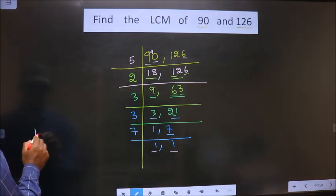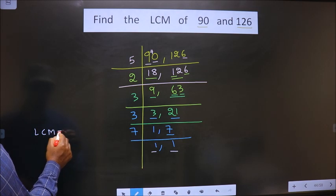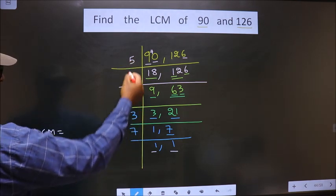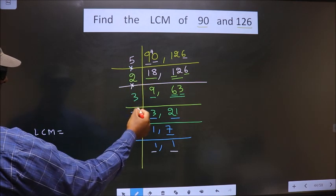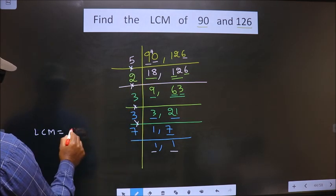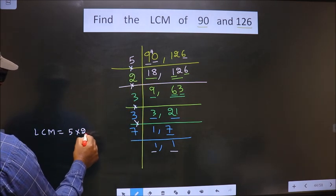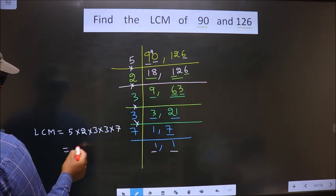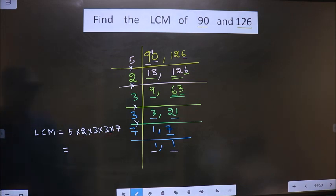So, now our LCM is the product of these numbers. That is, 5 into 2 into 3 into 3 into 7. So, let us multiply all this.